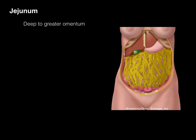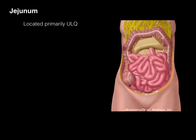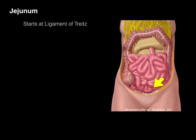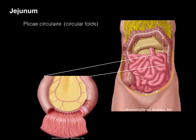The jejunum — the next part of the small intestine — is deep to the greater omentum. If we reflect the greater omentum up, we can see all the small intestines. The jejunum is located primarily in the upper left quadrant of the abdomen, starting at the ligament of Treitz. Within the jejunum there are numerous plicae circulares, or circular folds, whose whole purpose is to increase surface area for absorption.